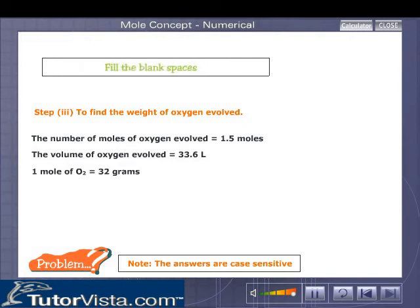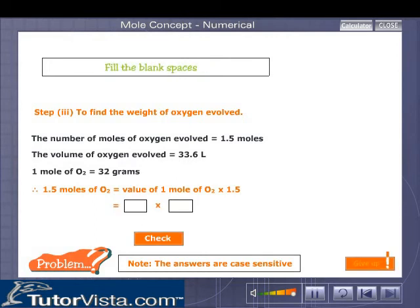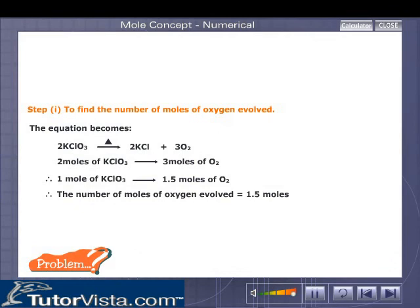Let us analyze what we have solved so far. The number of moles of oxygen evolved is equal to 1.5 moles. The volume of oxygen evolved is equal to 33.6 liters. 1 mole of O2 is equal to 32 grams. Therefore, 1.5 moles of O2 is equal to the mass of 1 mole of oxygen into 1.5, and what is that equal to? Key in the value. Give the unit of mass in words.